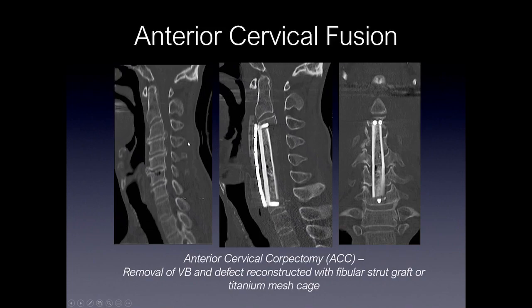Another type of cervical fusion that can be performed, if there's multi-level disease, is a corpectomy with a fibular strut graft or titanium mesh cage. In this example, there's multi-level disc disease due to disc osteophyte complex with severe spinal canal stenosis. This patient underwent multi-level corpectomy with placement of a fibular strut graft. Within the graft is bone graft material, and you can see a plate spanning these levels with vertebral screws.